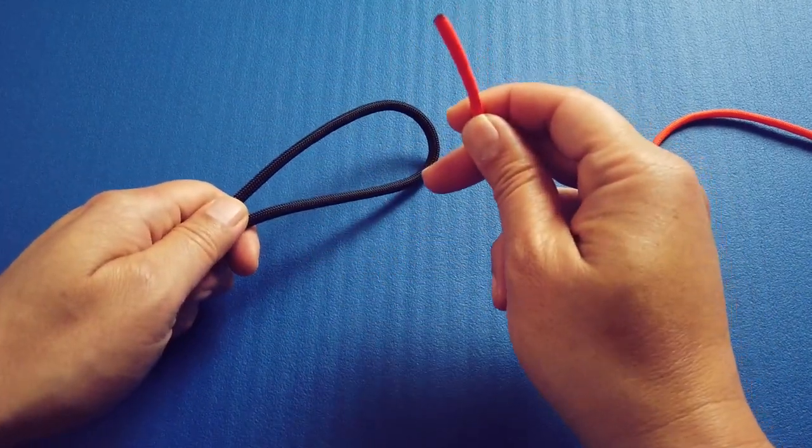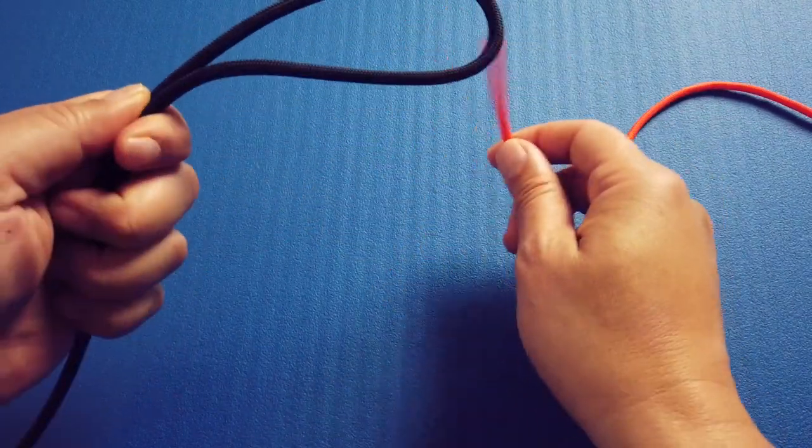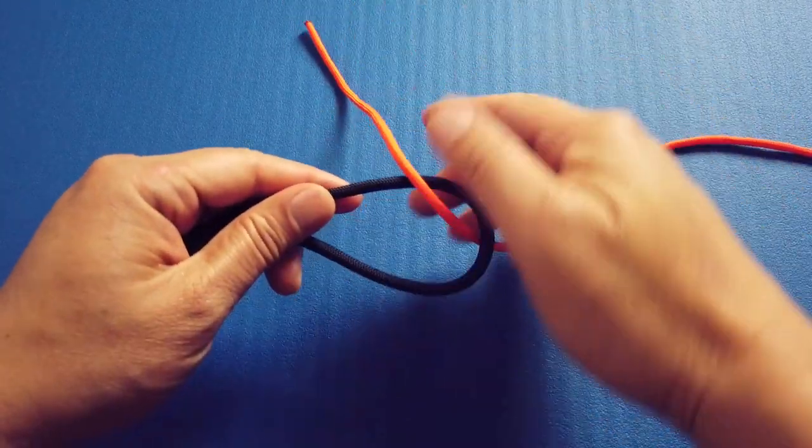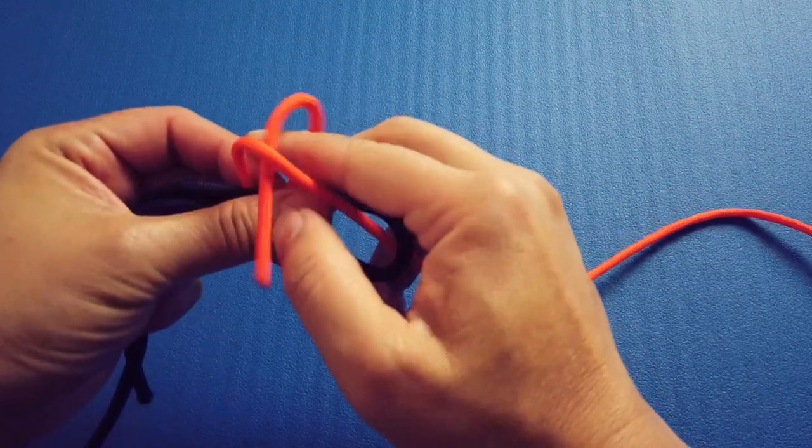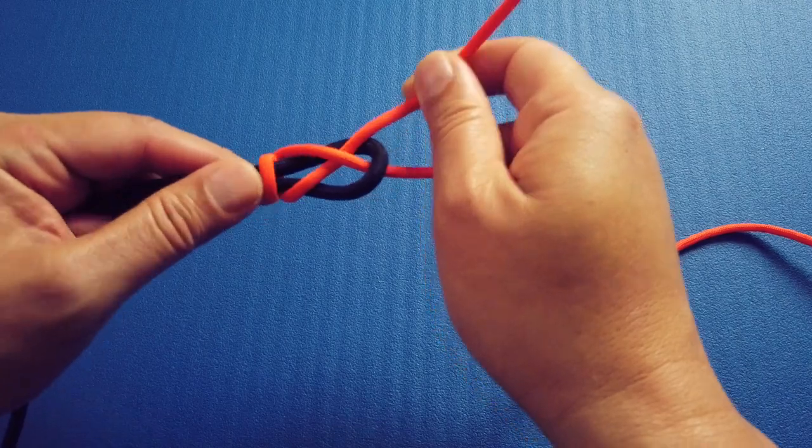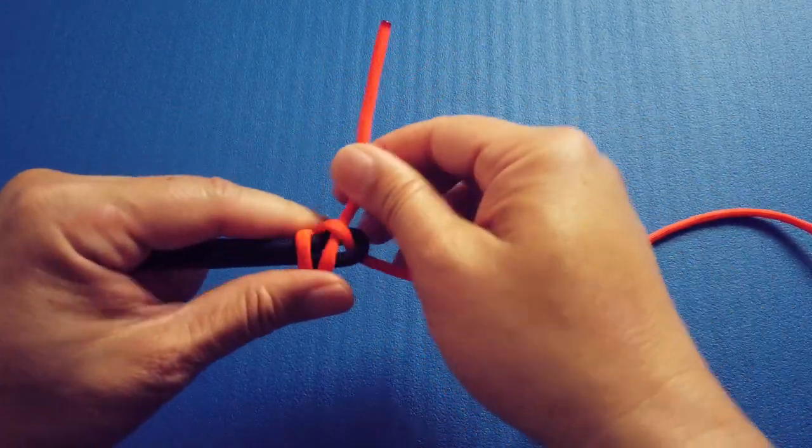With your bight in your left hand, take a working end. That's the end that's going to make the knot. Side note, another knot-tying term. Take that working end and go through the bottom of the bight. Wrap it around both cords and through the working end. Do it one more time so you can see two loops in there. Pull the working end tight against the bight and the end of the working end to tighten the knot.